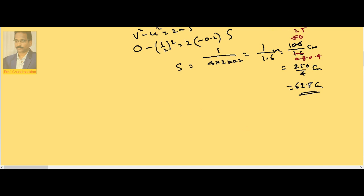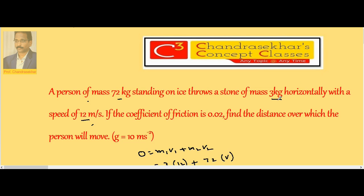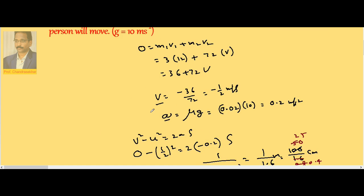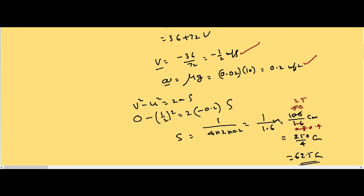So he will cover 62.5 centimeter before coming to rest when he throws the 3 kg body. Law of conservation of momentum gives the velocity gained by the person. With this initial velocity, he experiences a deceleration mu into g due to friction. The distance covered before finally coming to rest: initial velocity half, deceleration 0.2, substitution gives s value 62.5 centimeter.